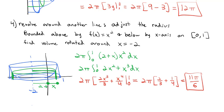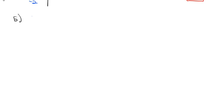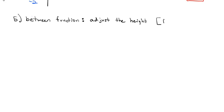When we revolve around another line, we have to adjust the radius — draw the picture to see whether to add or subtract a number from x. But the radius isn't the only thing that might have to adjust. What if we are between functions? The cylinder doesn't go all the way down to an axis. If we're between functions, we need to adjust the height by subtracting the functions.